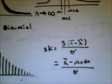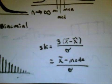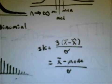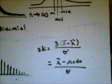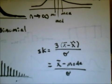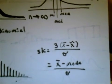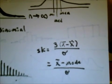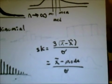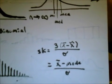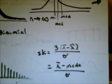Skewness is often measured by the skewness factor. The skewness factor is equal to either three times the difference between the mean and median divided by the standard deviation, or the difference between the mean and the mode divided by the standard deviation. It should be evident that the difference between the mean and the mode is usually three times the difference between the mean and the median. A positive skewness factor indicates a right skew while a negative skewness factor indicates a left skew.